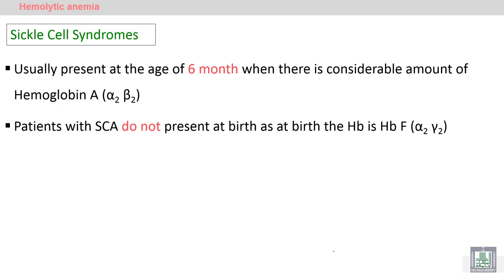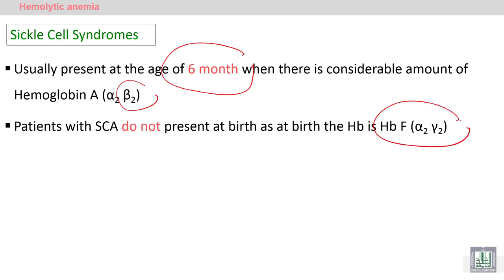Sickle cell syndromes present at the age of 6 months because the beta chain is completely formed at 6 months. Patients with sickle cell do not present with sickle manifestations at birth because at birth there is hemoglobin F — 2 alpha and 2 gamma chains — not hemoglobin A, which has 2 alpha and 2 beta chains.